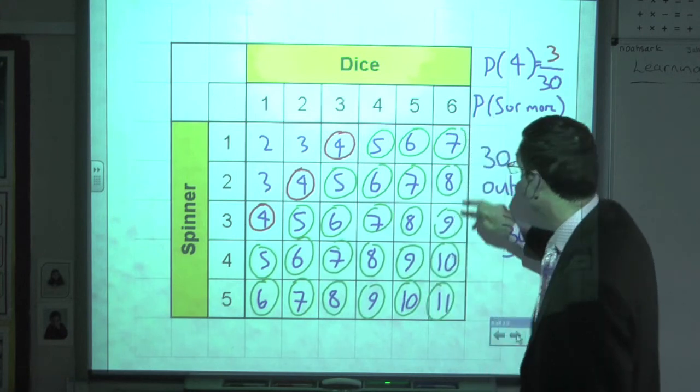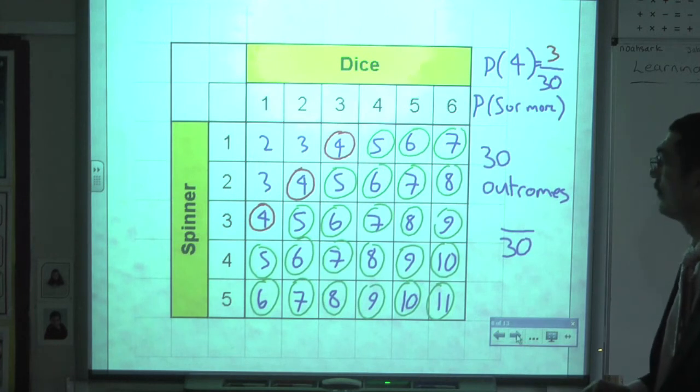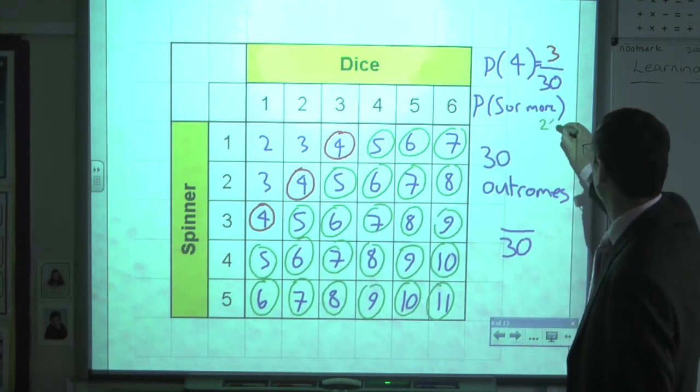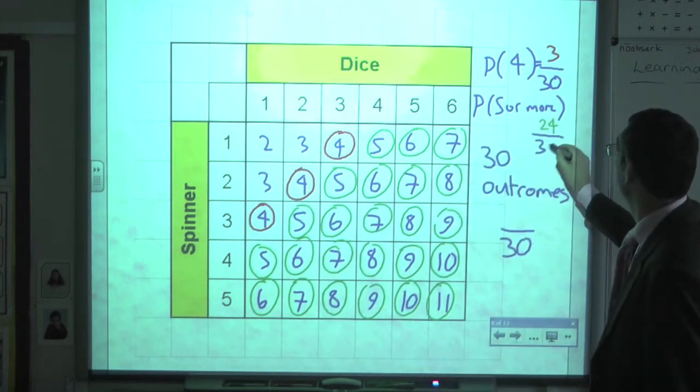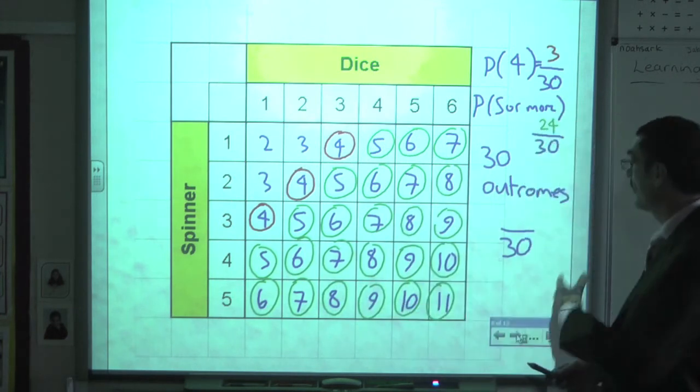18, 19, 20, 20, 20. So there's 24 all together. And again, that was out of 30. So the probability of getting 5 or more is 24 out of 30.